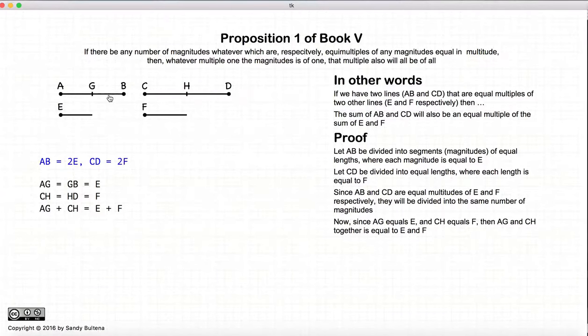All right, now let's take the first segment AG. We're going to take this segment right here. And we're going to take this segment right here. And we're going to add them together. And when we add them together, since AG and CH are both equal to E, it will be equal to E plus F.